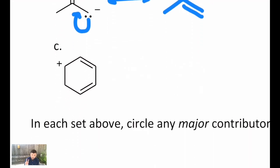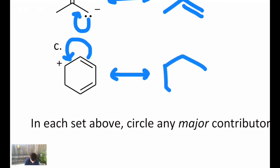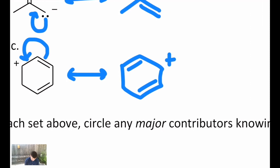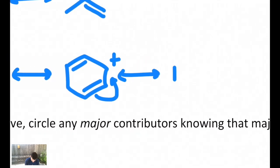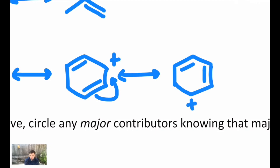There are actually two other contributors we can draw for this cyclic example. First, you can take the pi bond in the upper right and have it become a pi bond in the upper left — as a result, the plus charge is now on the other side of the ring. There's one more: you can take the pi bond in the lower right and have it become a pi bond on the right-hand side of the ring, so the formal charge moves to the very bottom of the ring. So sometimes there's more than just two contributors.